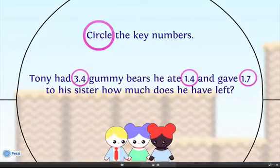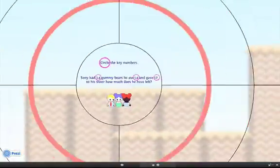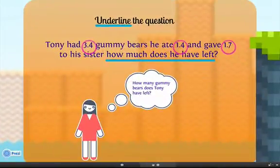First, you must circle the key numbers: 3 and 4 tenths, 1 and 4 tenths, 1 and 7 tenths.